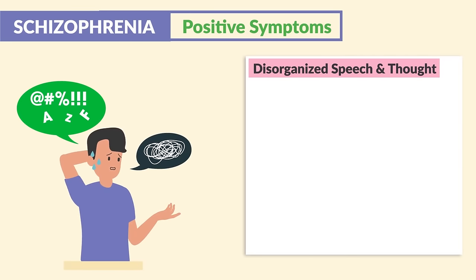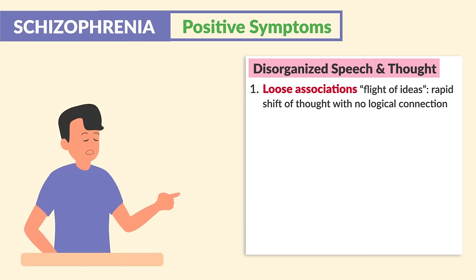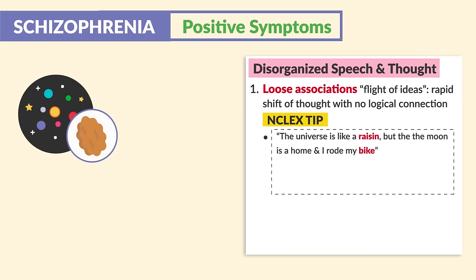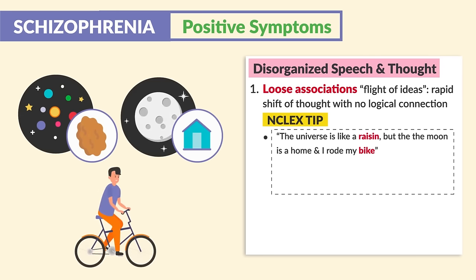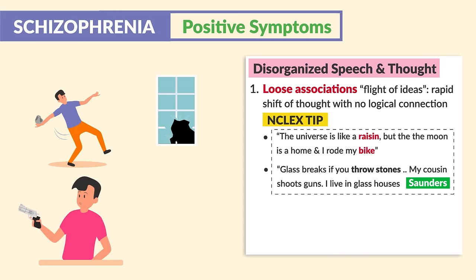Disorganized speech and thought is our third positive symptom category. Let's identify and recognize the different types of thought disturbances. Number one is loose associations — we have flight of ideas, basically a rapid shift of thought with no logical connection. Big NCLEX tip — for example: 'The universe is like a raisin, but the moon is a home and I rode my bike.' There's no logical connection, just jumping from idea to idea. Saunders mentions: 'Glass breaks if you throw stones. My cousin shoots guns. I live in glass houses.'